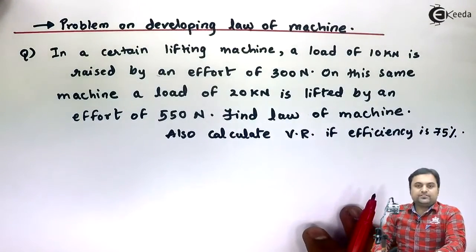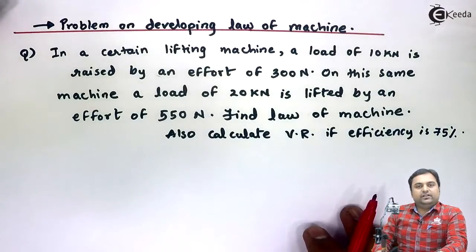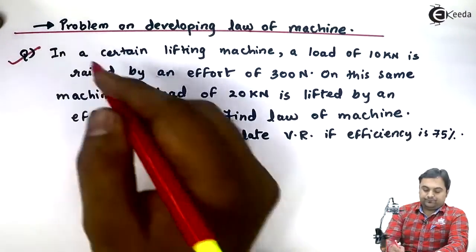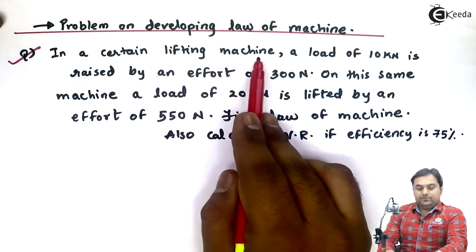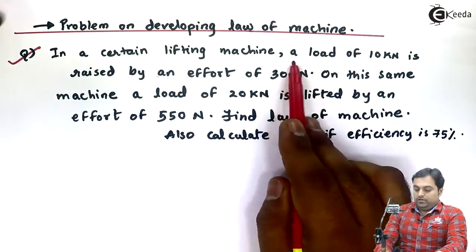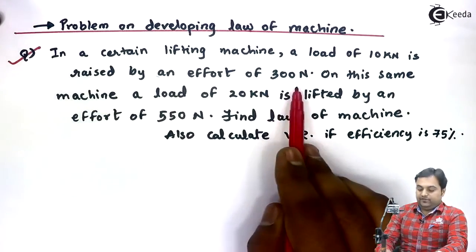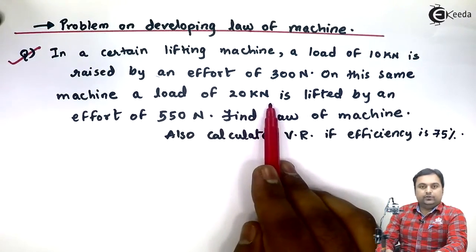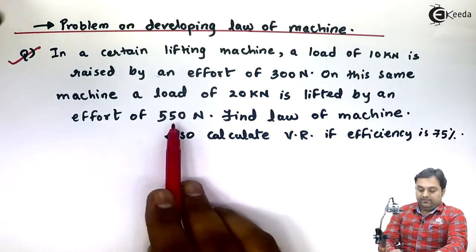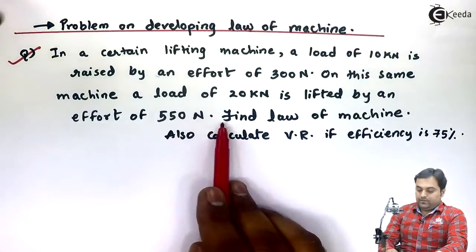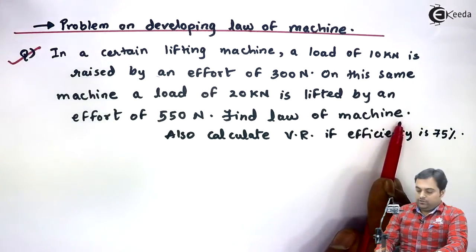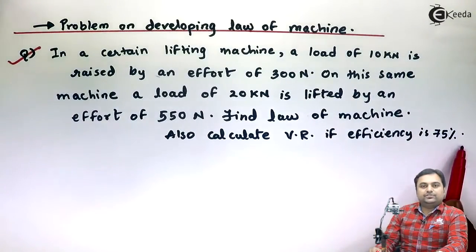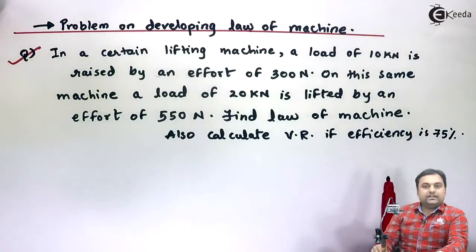Hello friends. In this problem we will develop the law of machine from the given data. In a certain lifting machine, a load of 10 kilo Newton is raised by an effort of 300 Newton. On the same machine, a load of 20 kilo Newton is lifted by an effort of 550 Newton. Find the law of machine and also calculate the velocity ratio (VR) if the efficiency is 75%.